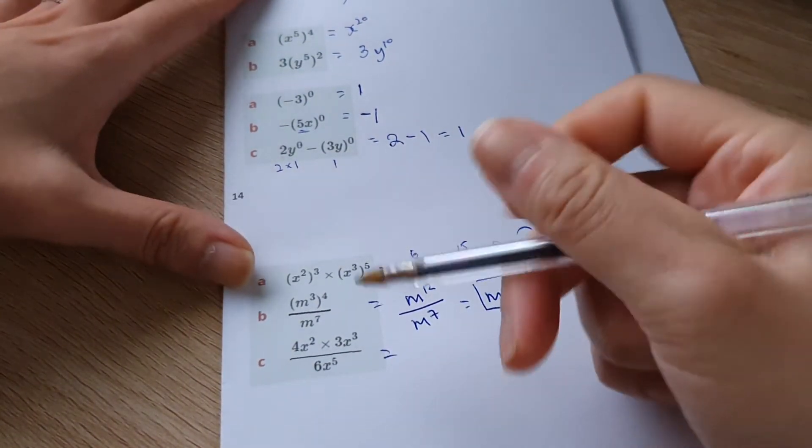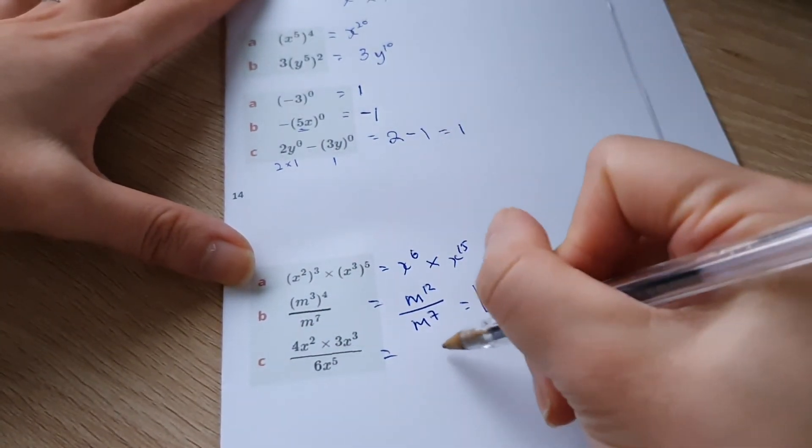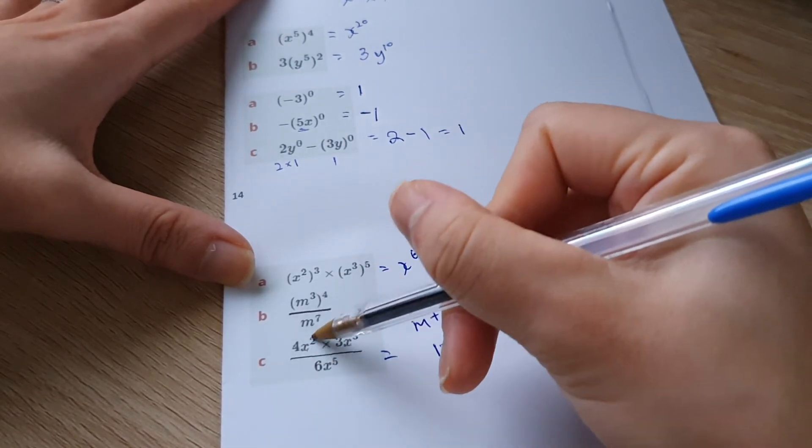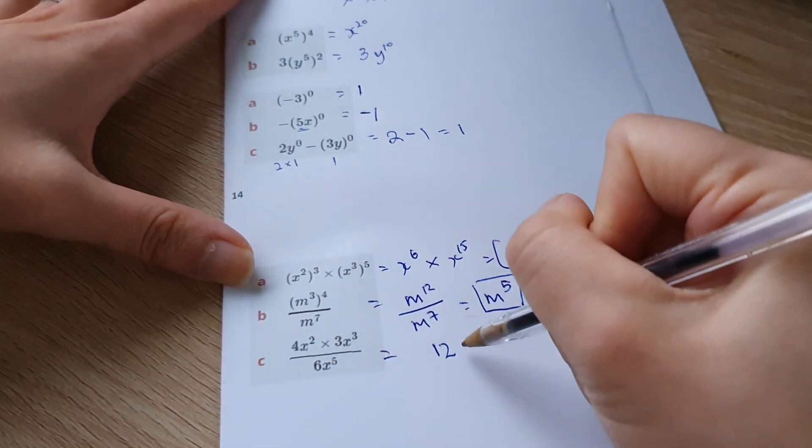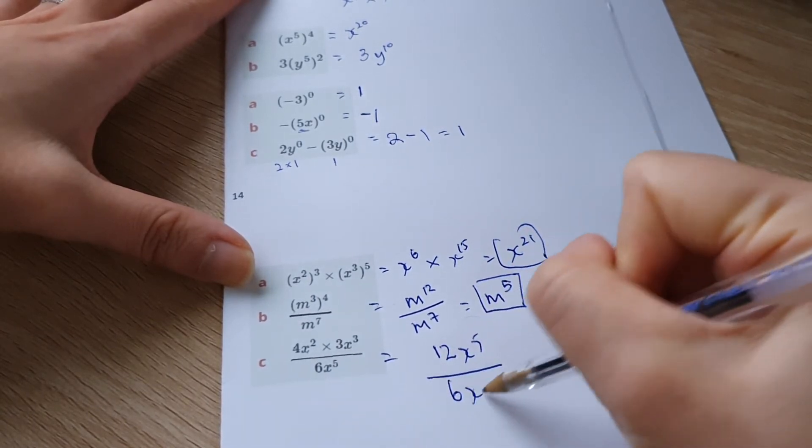And last one, it's a bit of a mixture. So let's deal with the numbers first. Four times three. At the top, we've got 12. And then x squared times x cubed is going to give us x to the power of five because they're multiplying. And down at the bottom, we still have 6x to the power of five.